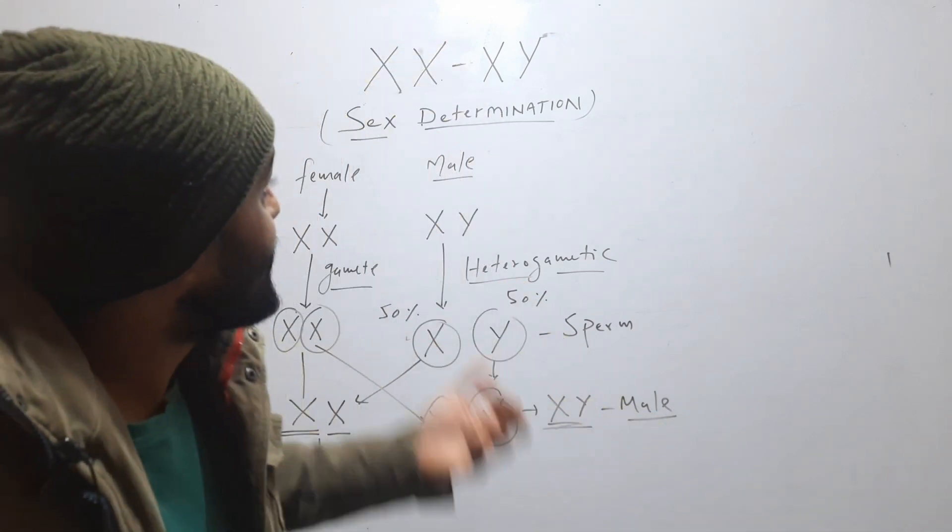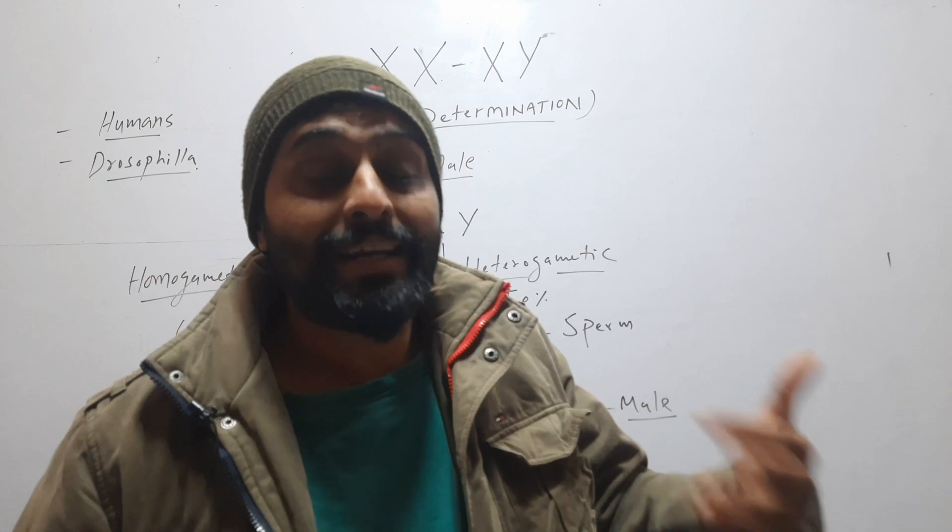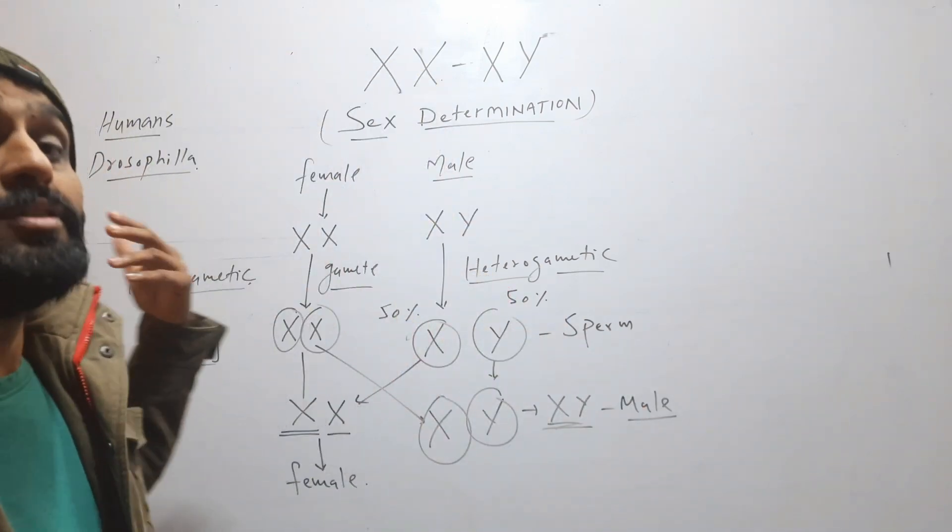So this is XX and XY type of sex determination that is found in humans and Drosophila.